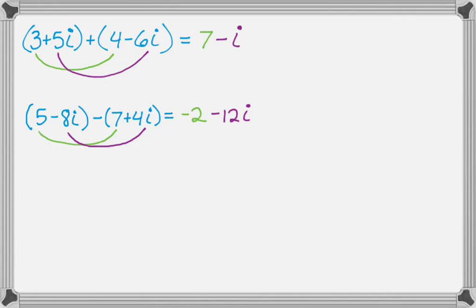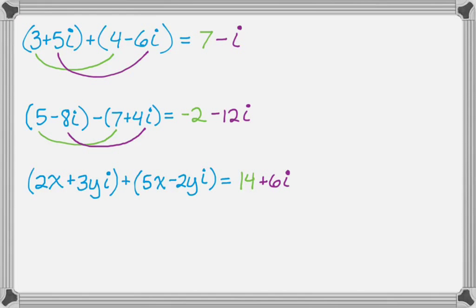Sometimes you'll see problems where there are X's and Y's — it's a sneaky way to set up a system of equations you have to solve. We have the complex number 2X plus 3Y times i, where X and Y are real numbers to solve for, plus 5X minus 2Yi. When you add those together you get 14 plus 6i.